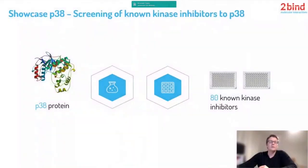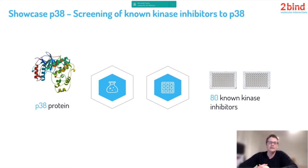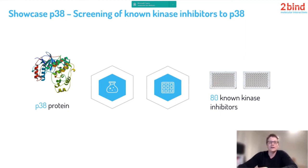The idea behind this screening is simply that kinase inhibitors very often have off-targets. They are designed to bind a specific kinase — the on-target — but suddenly they show off-target effects. We were interested in whether, out of those 80 known kinase inhibitors, some have p38 as an off-target. We had a kind of expectation that this would happen, and indeed it does — some kinase inhibitors do have p38 as an off-target.